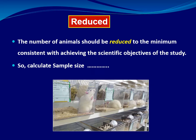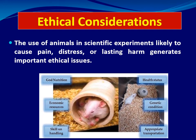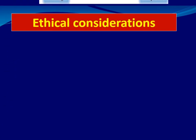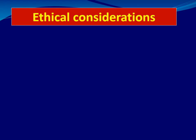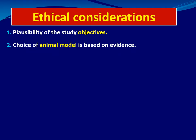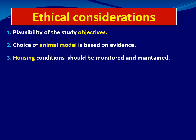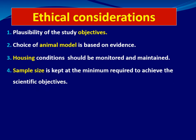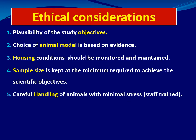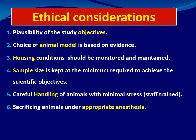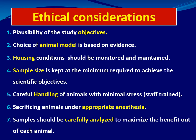We will discuss how to calculate sample size in a separate lecture. Ethical considerations: the use of animals in experiments likely to cause pain, stress, or lasting harm generates important ethical issues. The protocol should address: plausibility of objectives, evidence-based choice of animal model, monitored housing conditions, minimum sample size, careful handling to minimize pain, sacrificing animals under appropriate anesthesia, and careful analysis of samples to maximize benefit and never lose data.